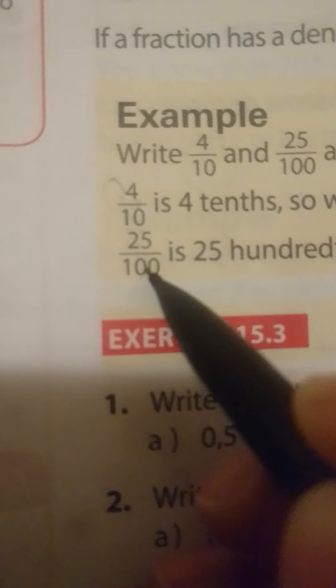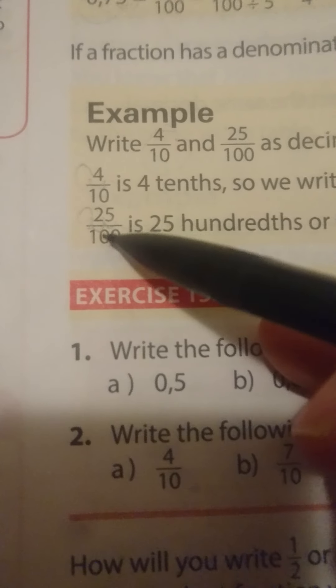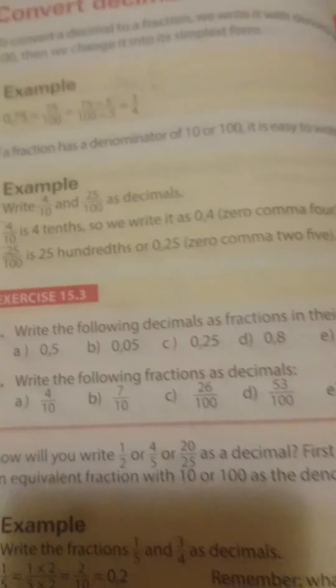The same thing goes for this number here. 25 divided by 100, there are two zeros, so we are going to move two spaces. 1, 2, 0 goes in front, so it's going to be 0.25. So, 4 over 10 can be written as 0.4, and 25 over 100 can be written as 0.25.